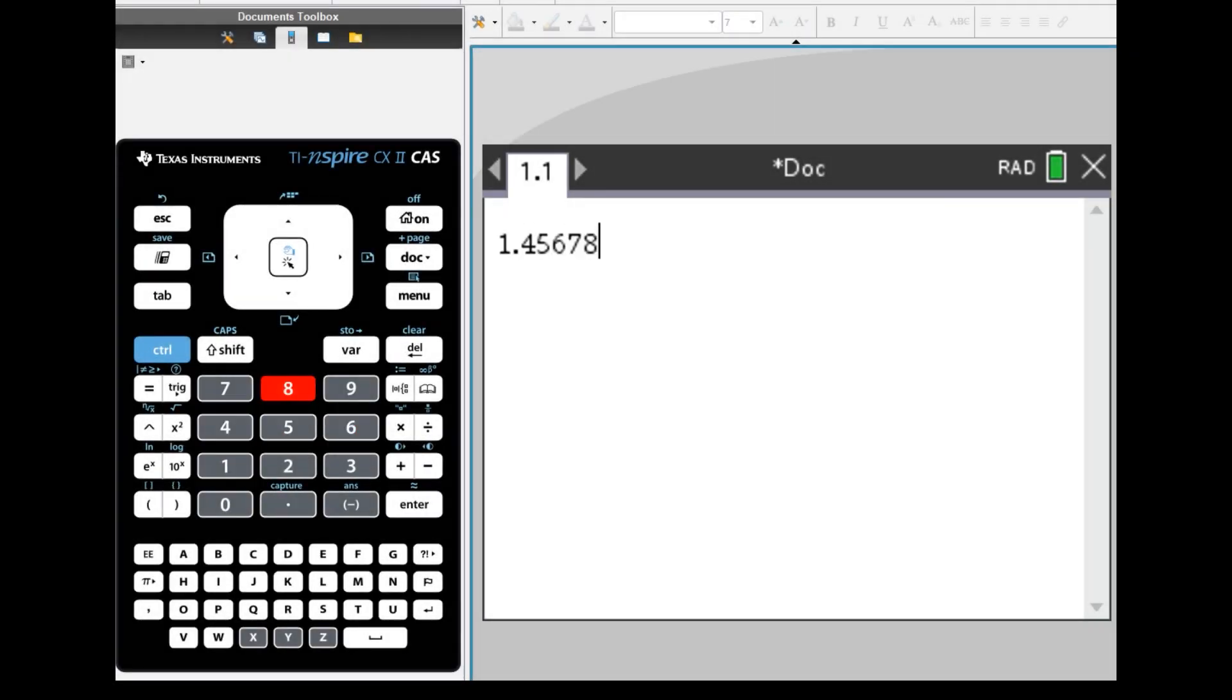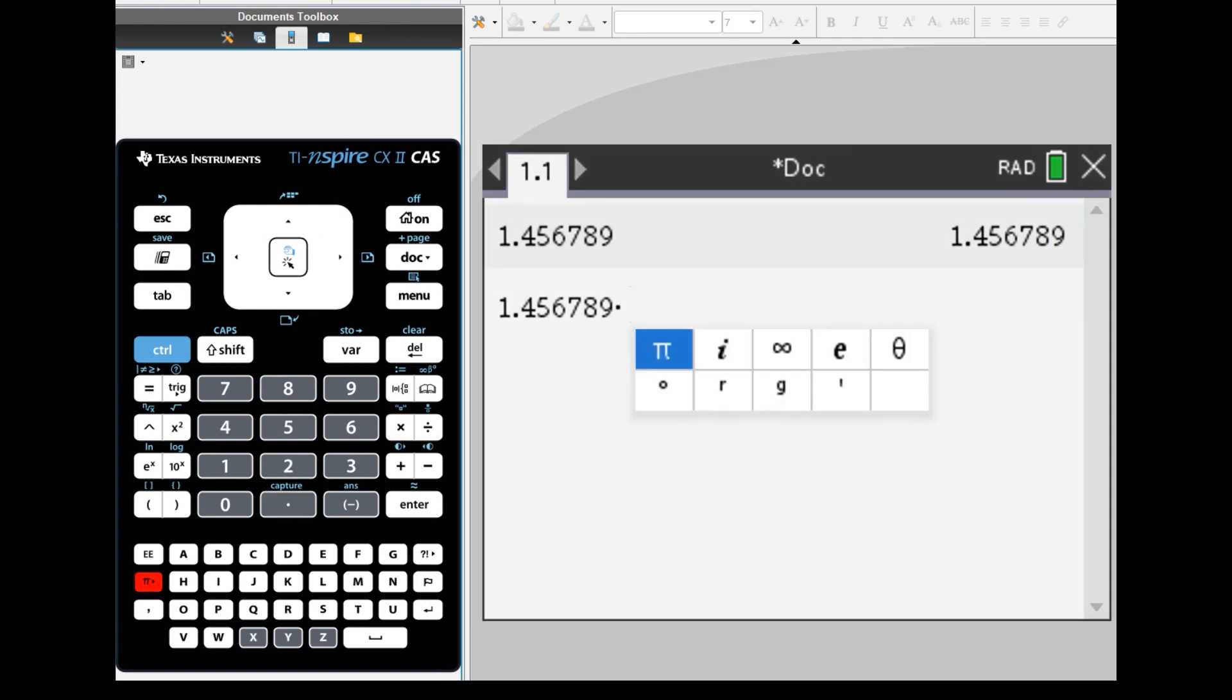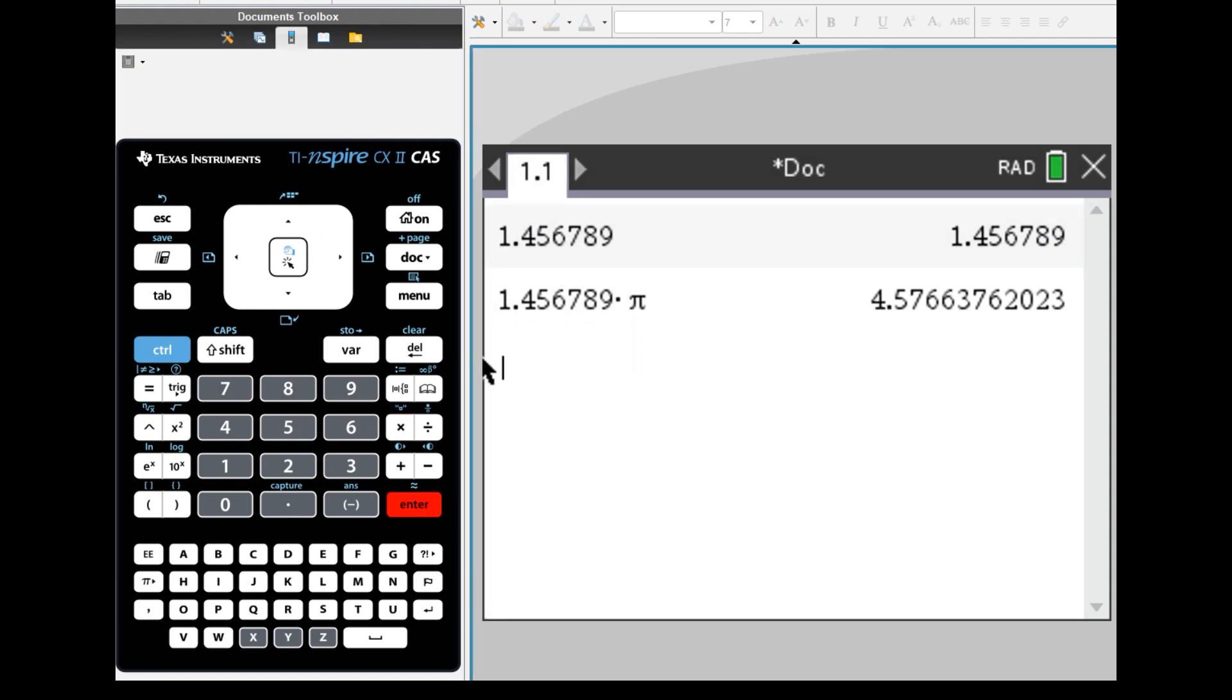When calculating values on your calculator, if the answer is 1.456789, you must copy and paste the entire value to the next question instead of rounding it to 1.46 with three significant figures. Using the rounded value for subsequent questions can lead to a different answer than the one in the answer sheet.